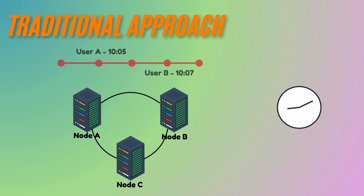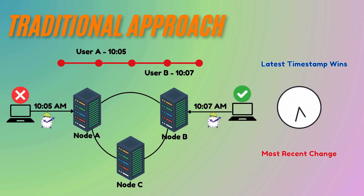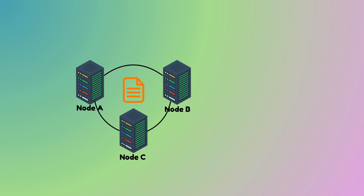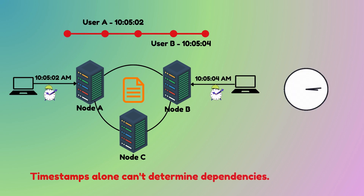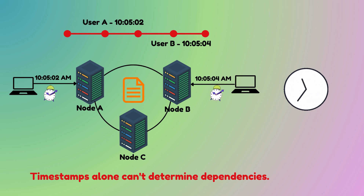A typical approach is to use timestamps — the latest timestamp wins, meaning the system just keeps the most recent change. But here is the problem: timestamps don't capture causality. If two updates occur around the same time, timestamps can't tell if one update depends on another. This can lead to situations where a valid change gets overwritten just because it arrived slightly later.